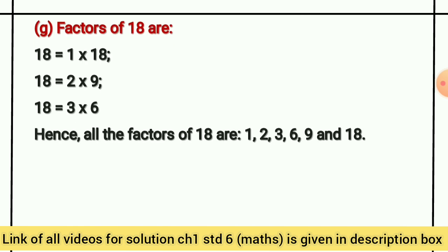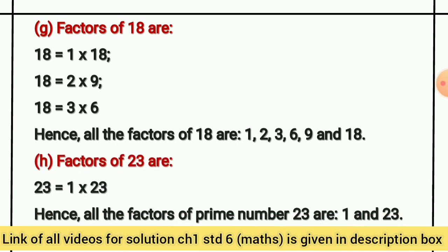Factors of 18 — all the factors of 18 are 1, 2, 3, 6, 9, and 18. Factors of 23 — all the factors of prime number 23 are 1 and 23.